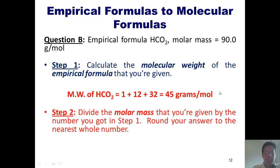Step two, divide the molar mass that we're given in the problem by the number we just got in step one. Round it to the nearest whole number. So the molar mass given in our problem is 90. The amount we just calculated in step one is 45. So if I take 90 and divide it by 45, I get a nice, neat number of two.